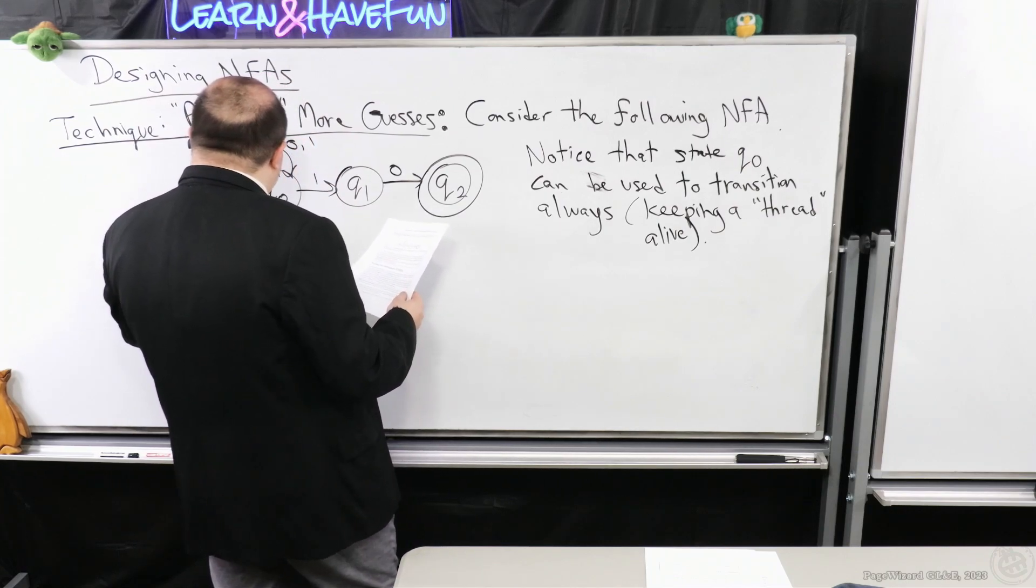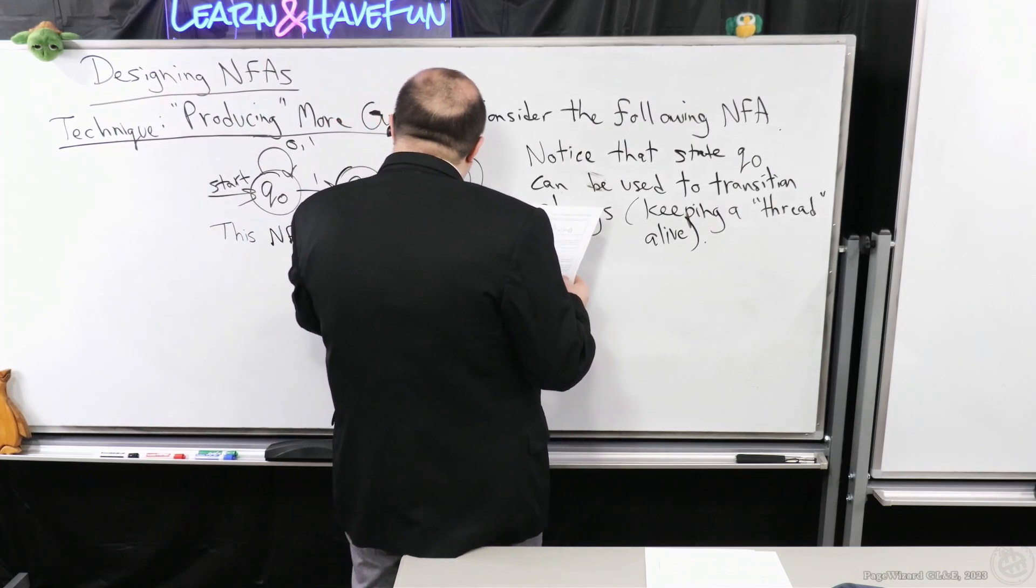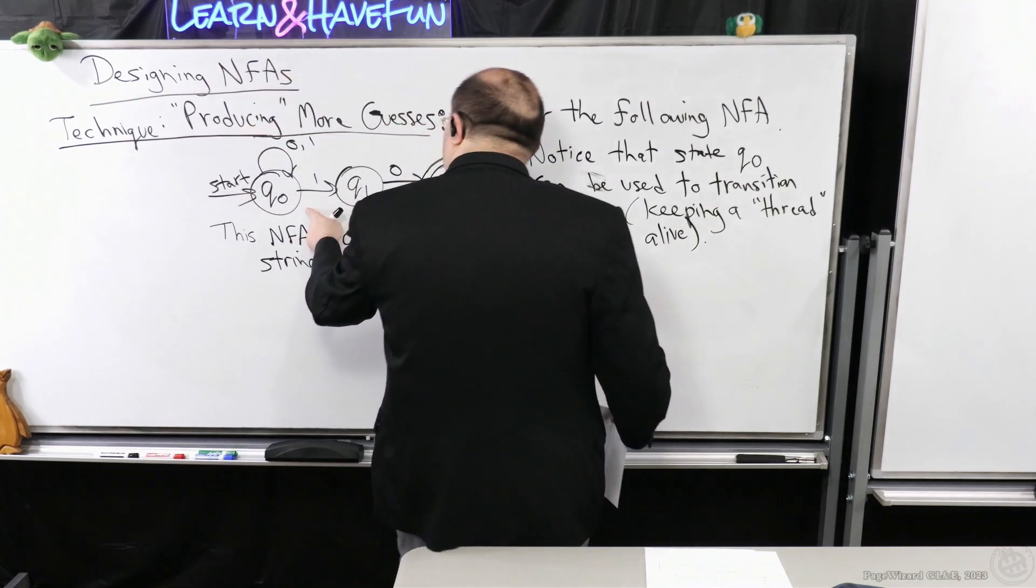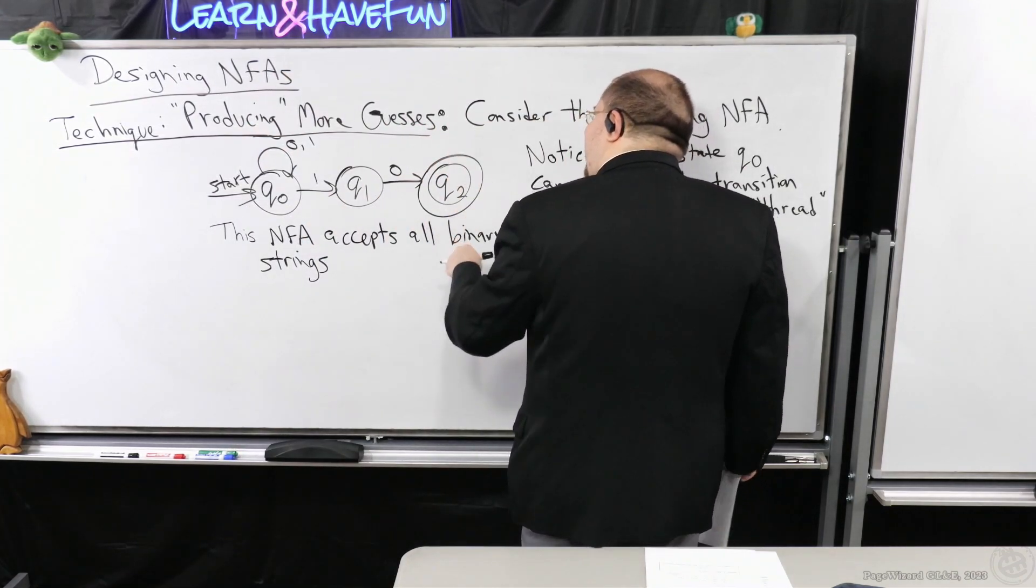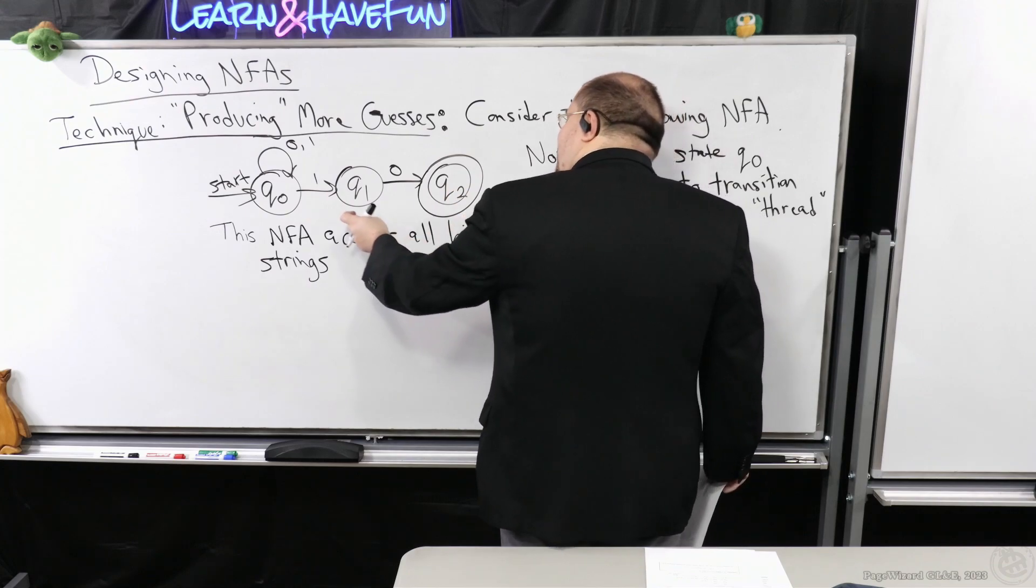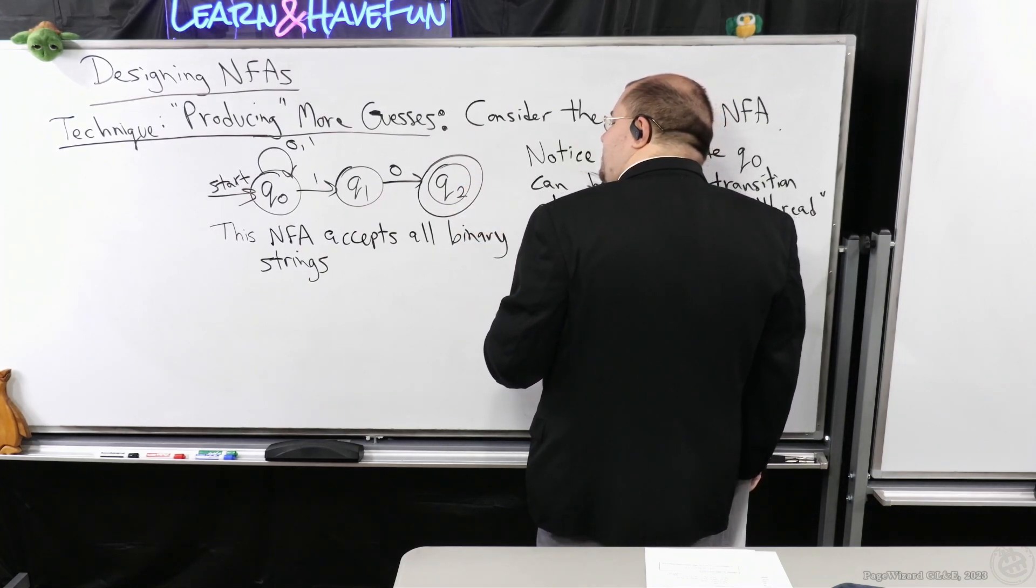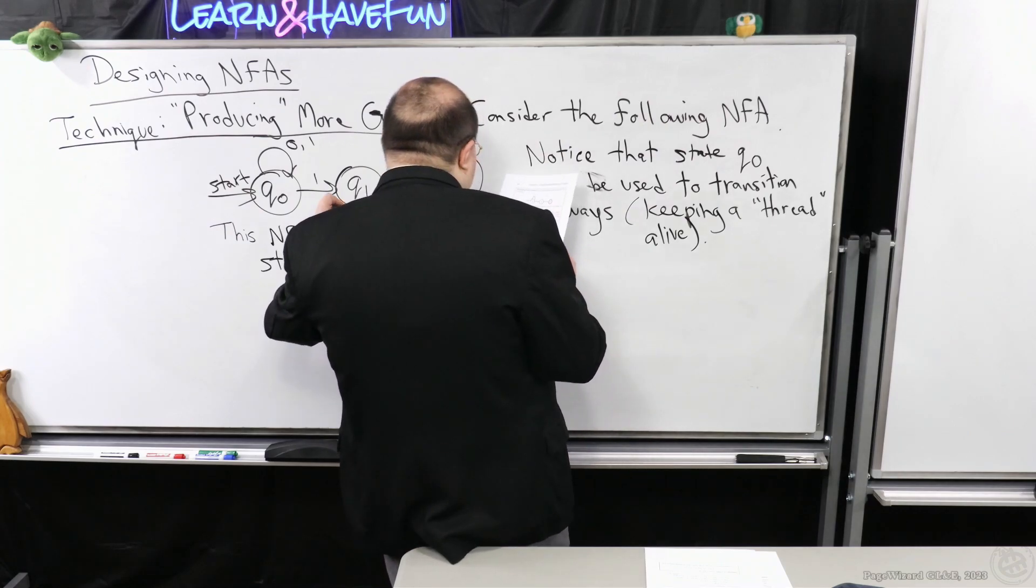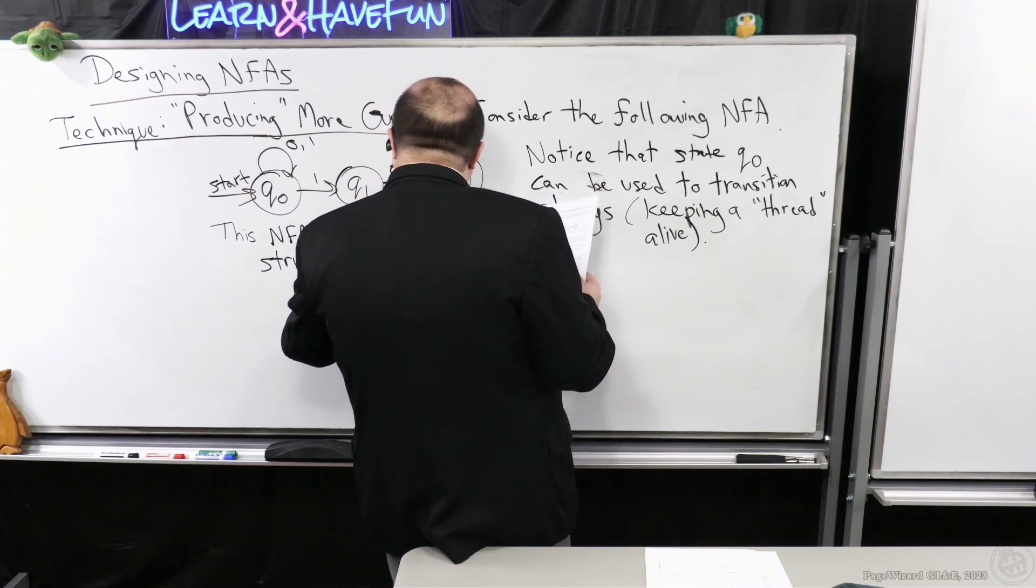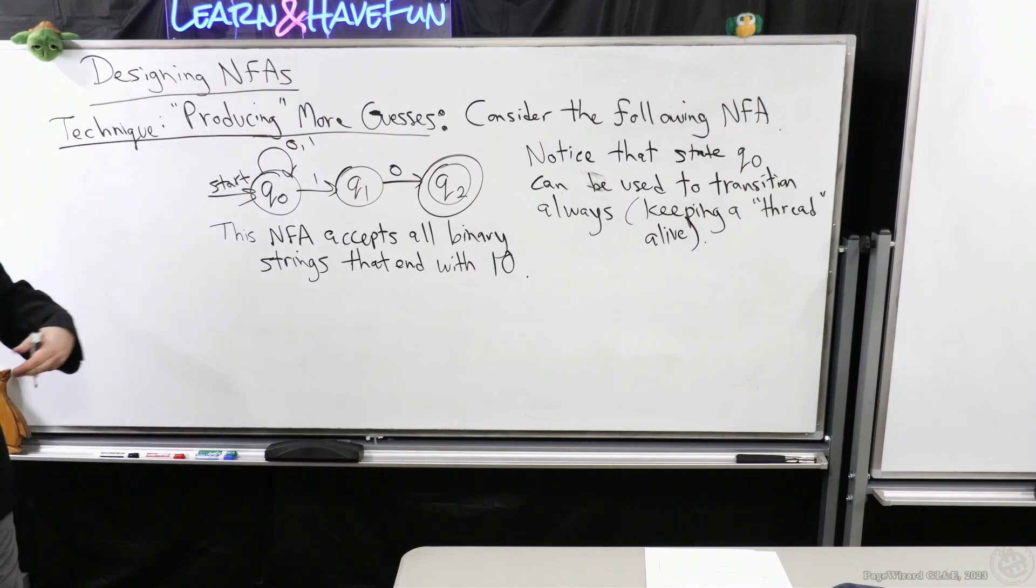So this NFA accepts all binary strings that do what? So remember, if it reads a 1, then a 0, then it reads anything else, it's done. As in, it will kill that thread. However, if you read the whole input, and after reading a 1 and then a 0, and you're here, you accept. Well, it means that that string has to end with 1, then 0, right? So accept all binary strings that end with 1, 0. So this is our first example of an NFA here.